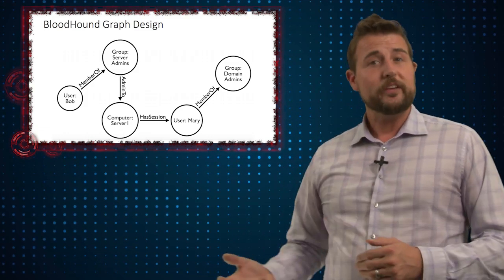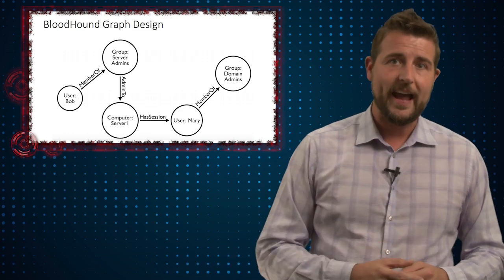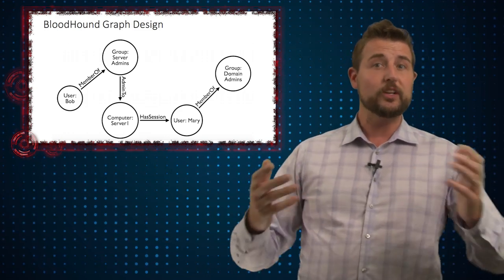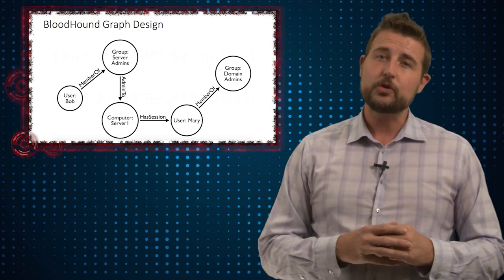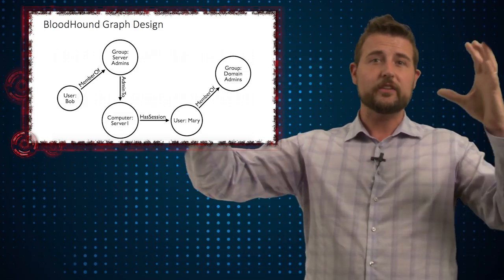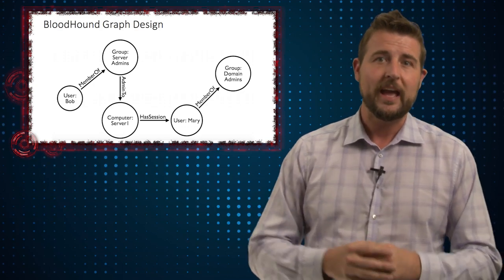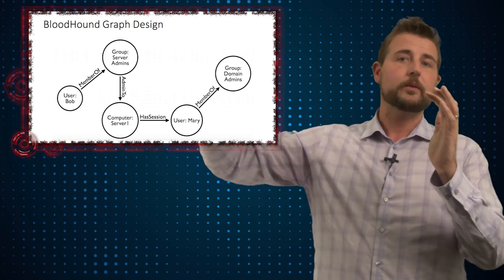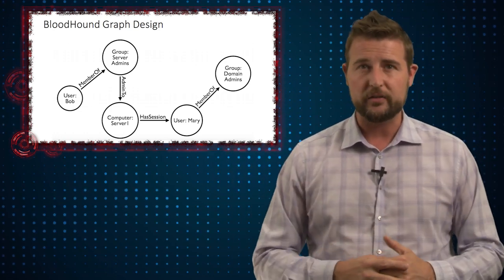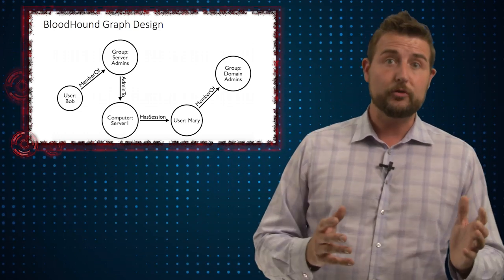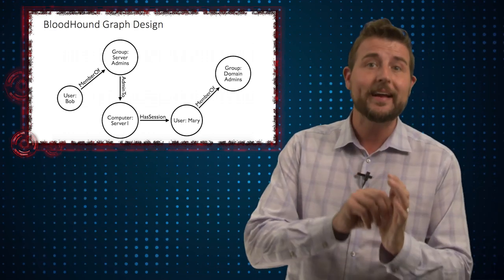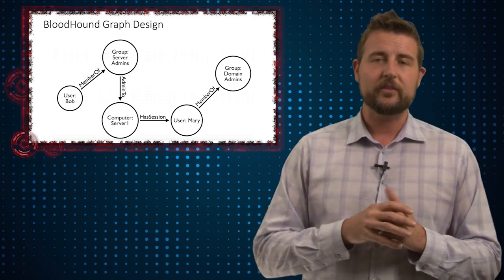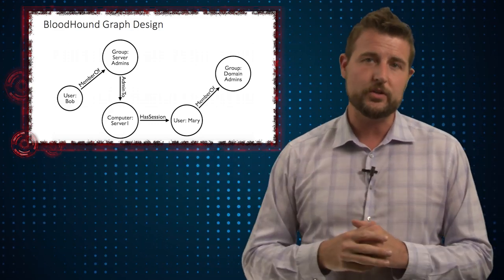The big takeaway was that the researchers released a tool called Bloodhound that takes this data and actually visualizes it using graphing theory. It's a great visual tool that can show you a Windows network and the path you have from the computer you own to other computers in the network using the accounts you have. It makes it really easy to show the path you might take — from some unprivileged user, using the accounts and computers you have access to — to get domain credentials.